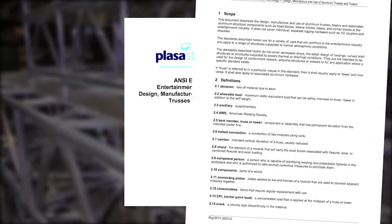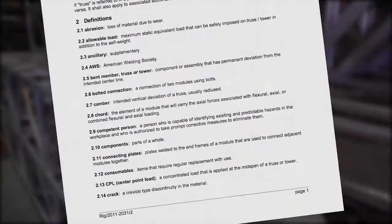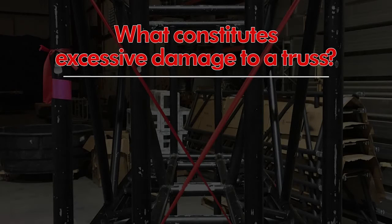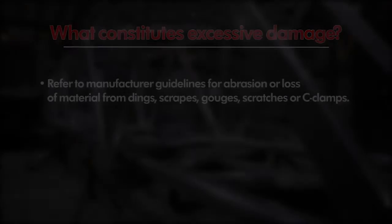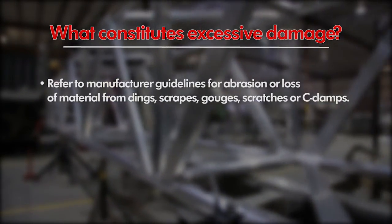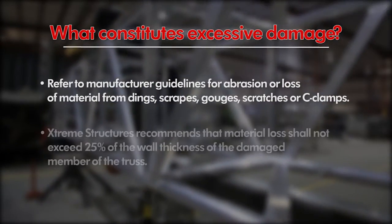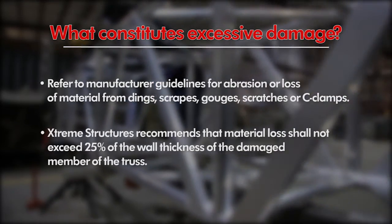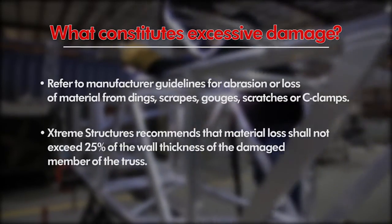Section 2 of the E1.2 Standard provides definitions for the inspection items listed in this video. During the inspection process, it is important to know what is considered damage that would warrant removing the truss from service. Refer to manufacturer guidelines for abrasion or loss of material from dings, scrapes, gouges, scratches, or C-clamps. Extreme Structures recommends that material loss shall not exceed 25% of the wall thickness of the damaged member of the truss.